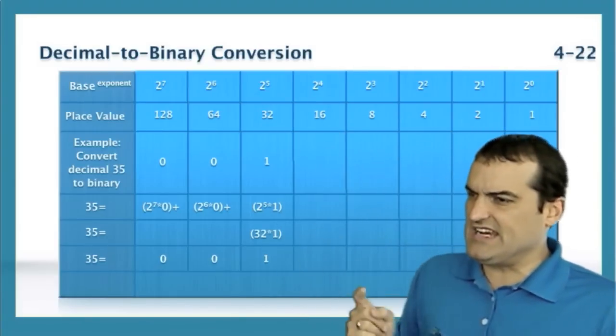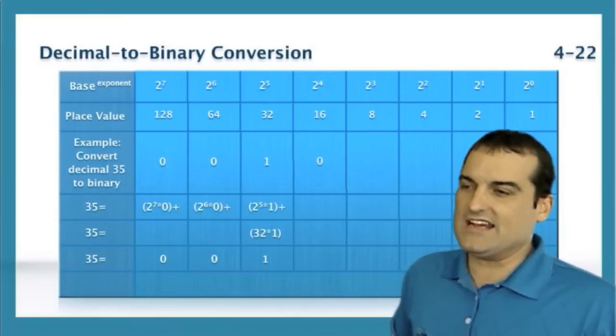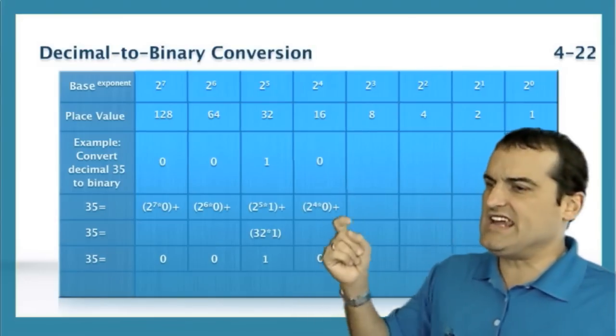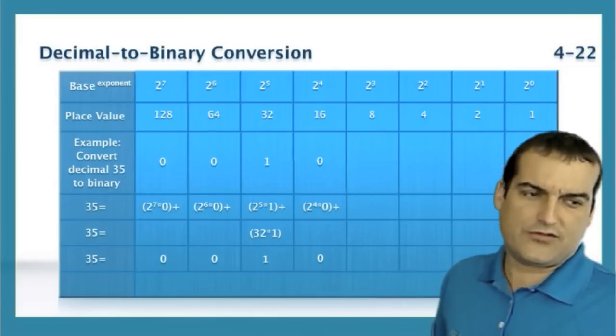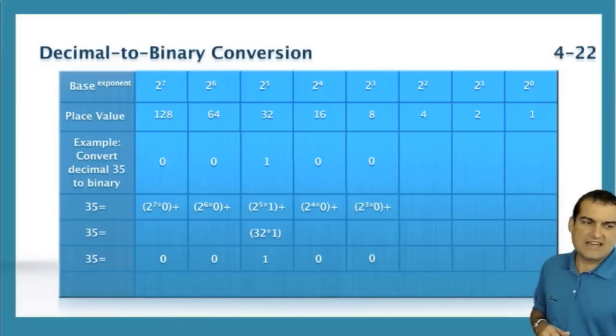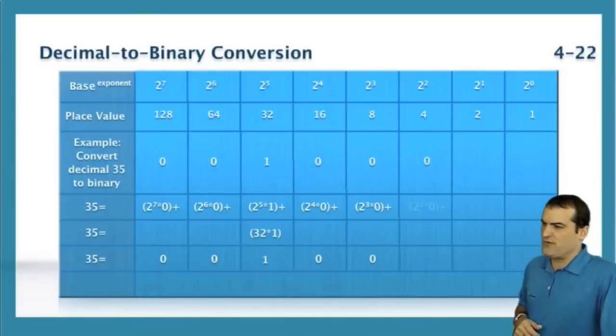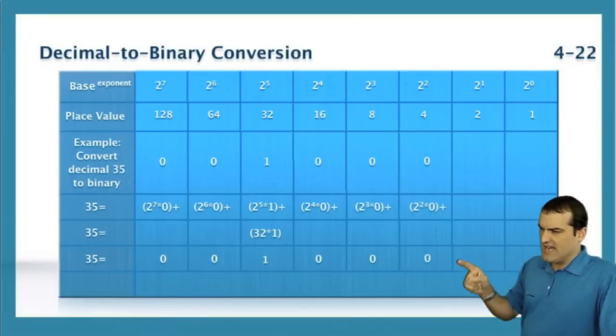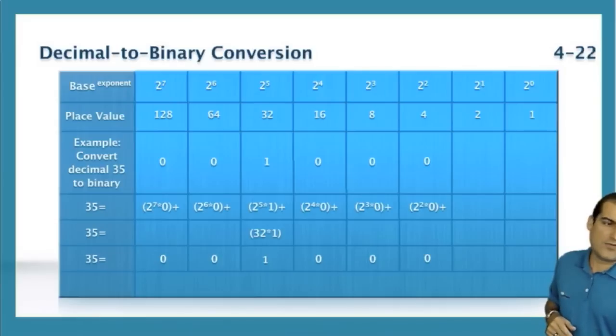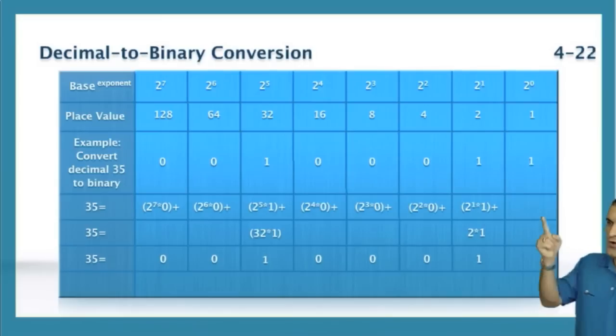We have a remainder of 3. Can we take 16 from 3? The answer, no, we cannot. So we have a 0 in this position. Can we take 8 from the remainder of 3? No, we cannot. So we have a 0 in that bit position. Can we take 4 from 3? No, we cannot. A 0 in that position. And we can take 2 from 3, leaving us a remainder of 1. And we subtract the 1 from that, giving us a 1 in that bit position.